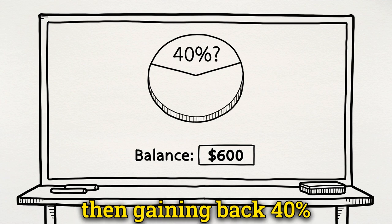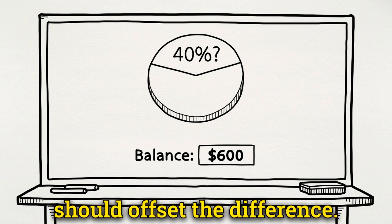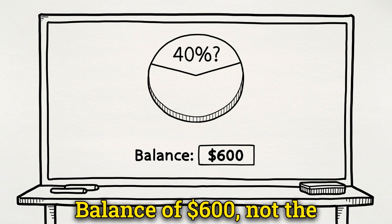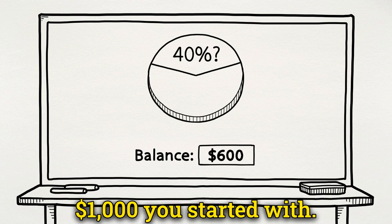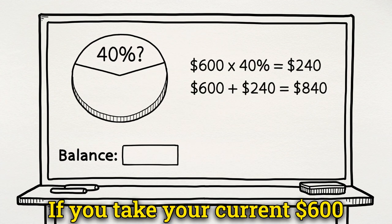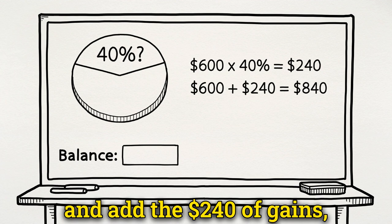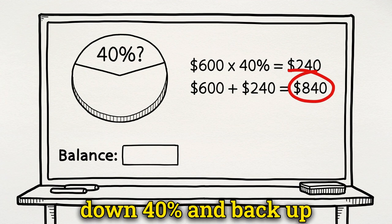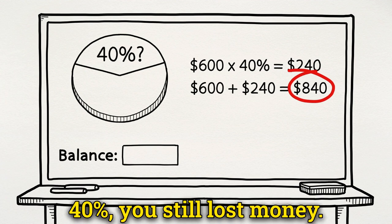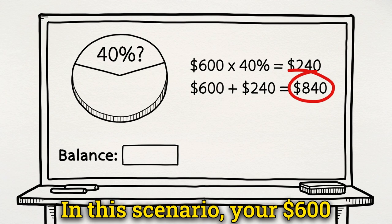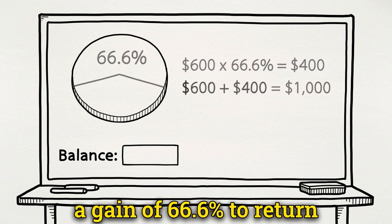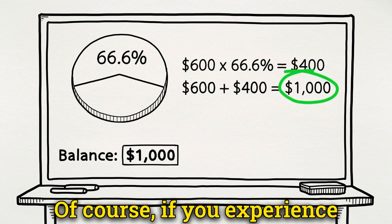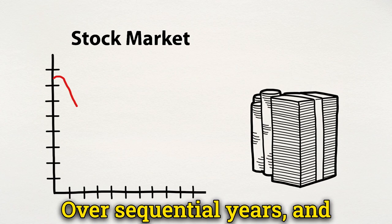Your instincts may tell you that if you lose forty percent, then gaining back forty percent should offset the difference. But any new returns are calculated based on your new current balance of six hundred dollars, not the one thousand dollars you started with. If you take your current six hundred dollars and add two hundred and forty dollars of gains, you still only have eight hundred and forty dollars. Your six hundred dollars would actually need to experience a gain of sixty-six point six percent to return to your original one thousand dollars.